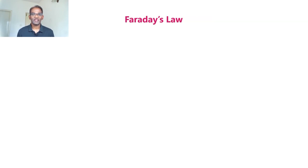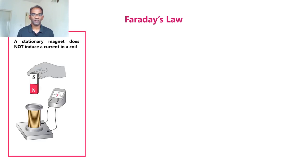Now let us discuss about Faraday's law. Before we begin, let us see some experimental evidences that suggest the existence of Faraday's law. In the first example, we have a coil connected to a galvanometer and a stationary bar magnet. If we have a stationary bar magnet, we can see that there is no deflection in the galvanometer.